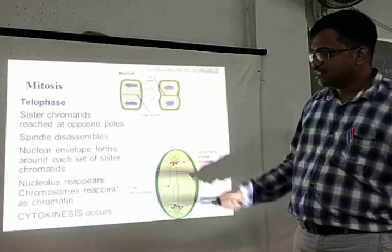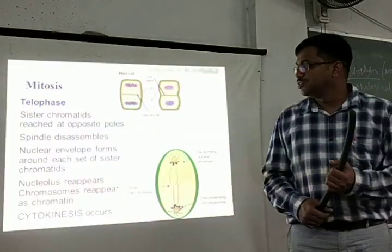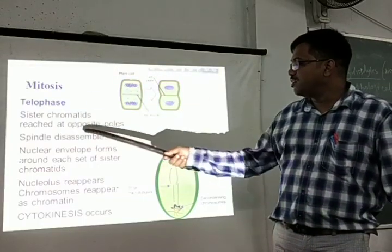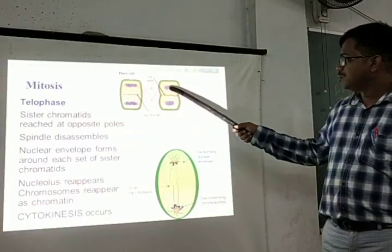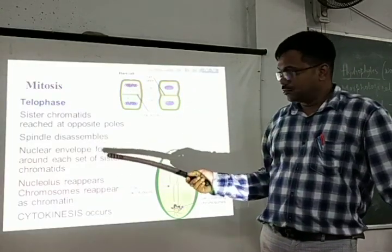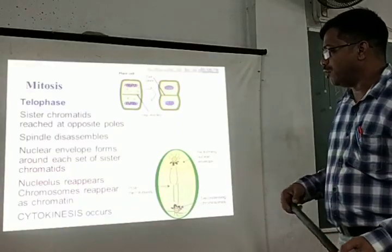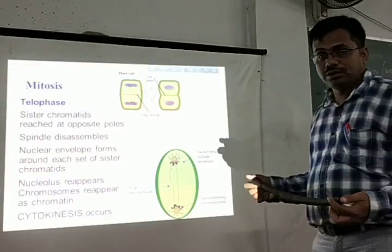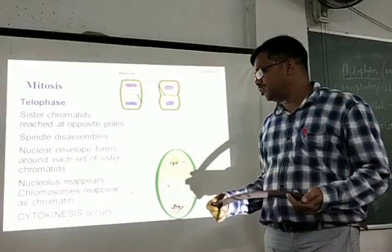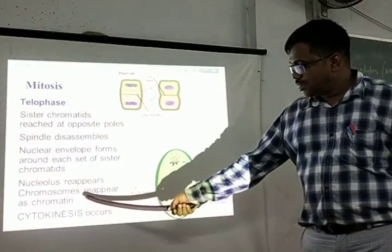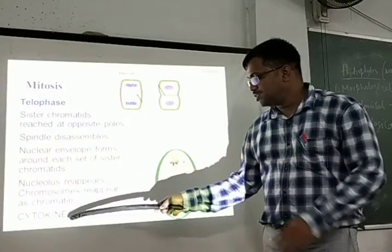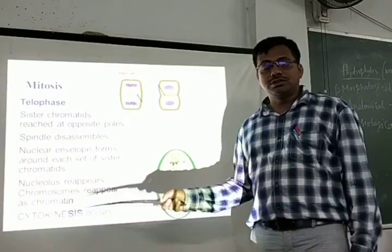Telophase is the last phase of mitotic cell division. Two sets of sister chromatids reach the opposite poles. The spindle disassembles, and the nuclear envelope forms around each set of chromosomes. The nucleolus reappears, chromosomes de-condense back to chromatin form, and at the end of telophase, cytokinesis — cytoplasmic division — begins.